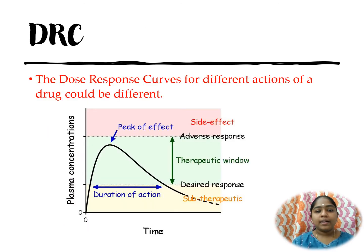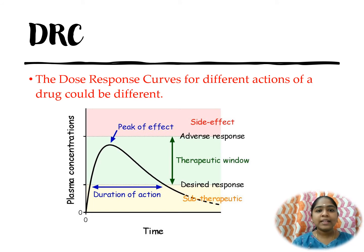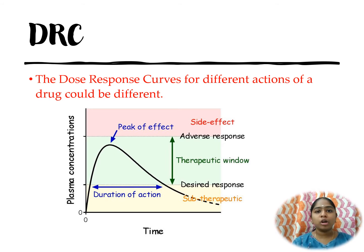The drug response curves for different actions of a drug could be different. For example, salbutamol may have one drug response curve for bronchodilation and another for tachycardia.